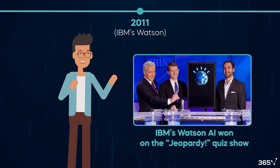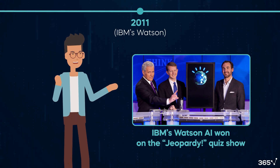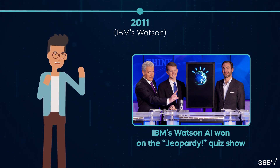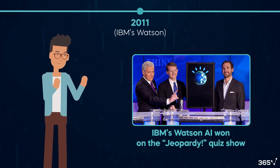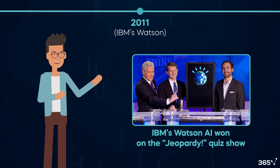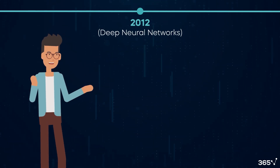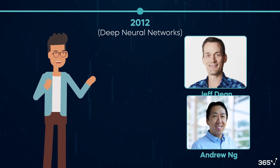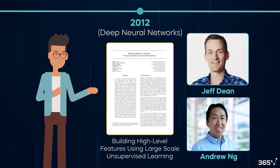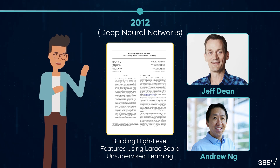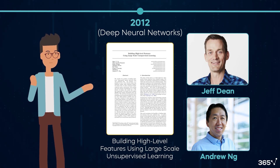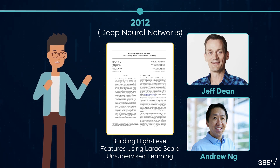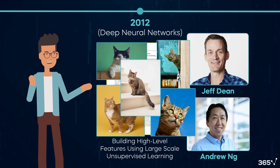In 2011, IBM's Watson AI won the Jeopardy quiz show, showcasing substantial advances in natural language processing — AI was able to work with human language. In 2012, researchers at Stanford and Google, including Jeff Dean and Andrew Ng, published "Building High-Level Features Using Large-Scale Unsupervised Learning," a paper that advanced multi-layer neural nets, or deep neural networks. Their system excelled at recognizing cats.